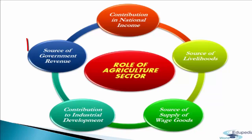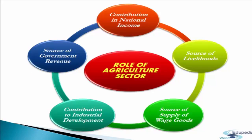The last consideration is source of government revenue. Agriculture is one of the most important sources of income for both the central and state governments. The government gets a significant share of income from land revenue. Even sectors like railways obtain a substantial part of their income from the movement of agricultural commodities.